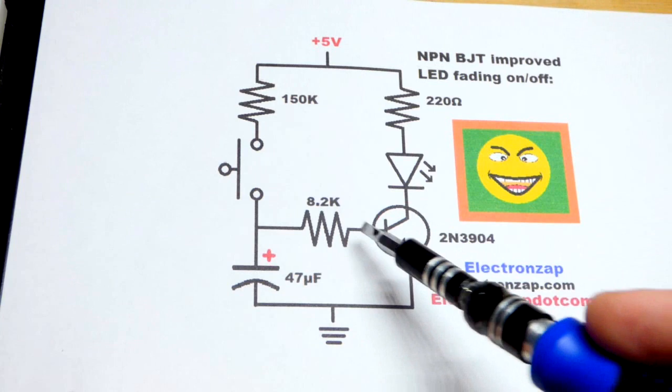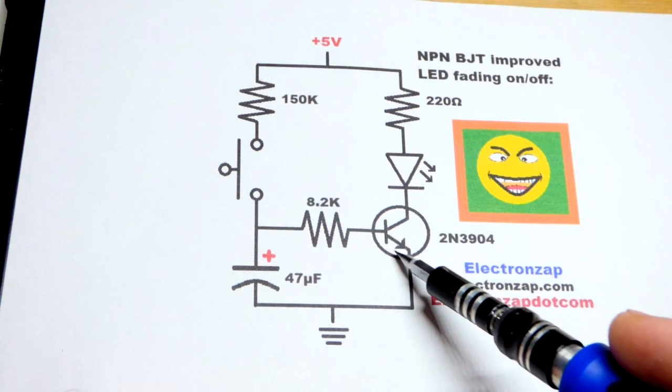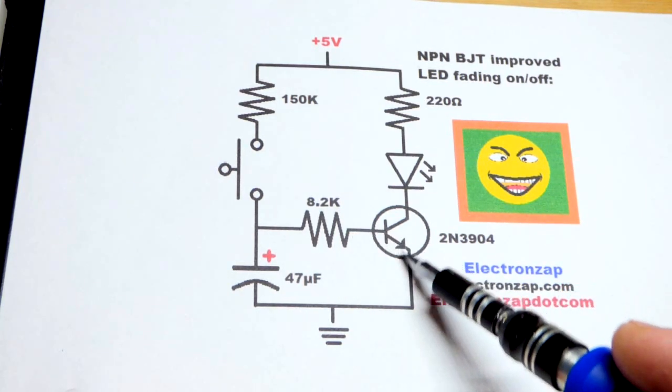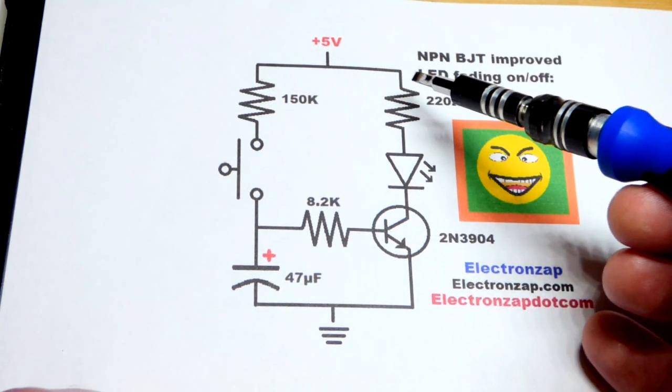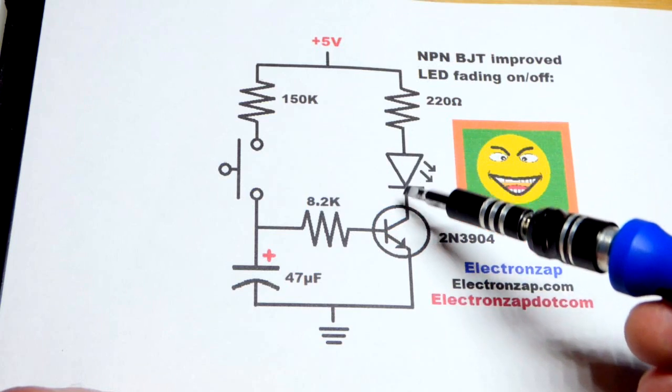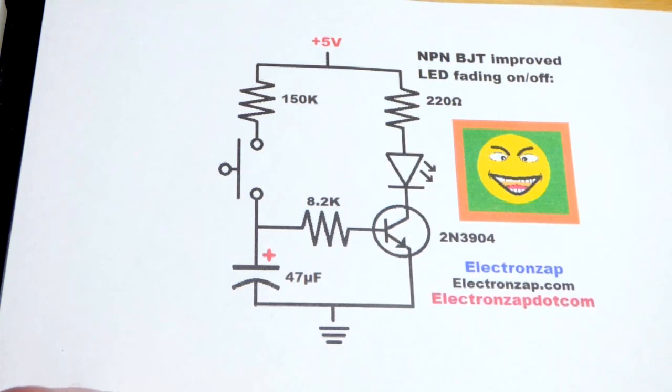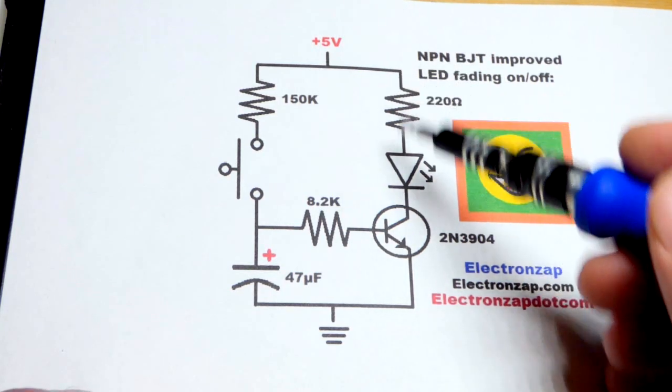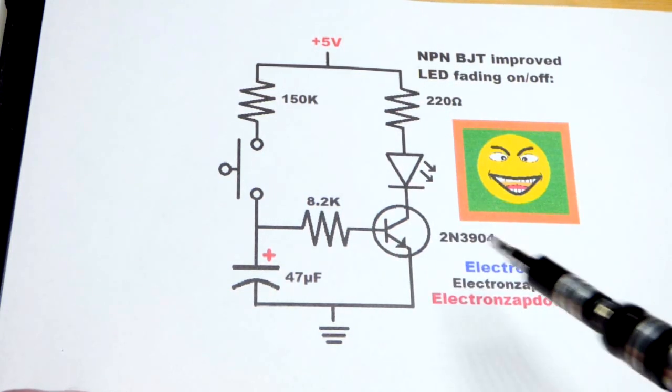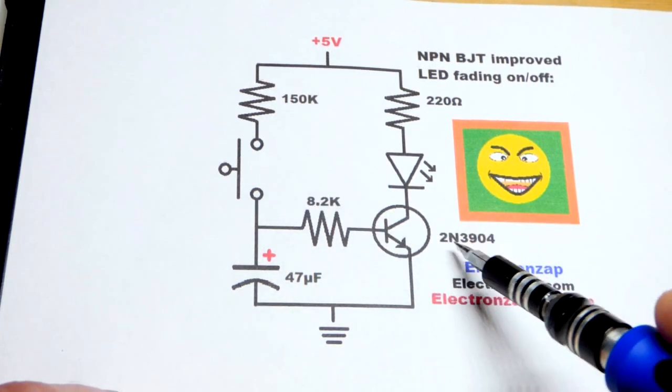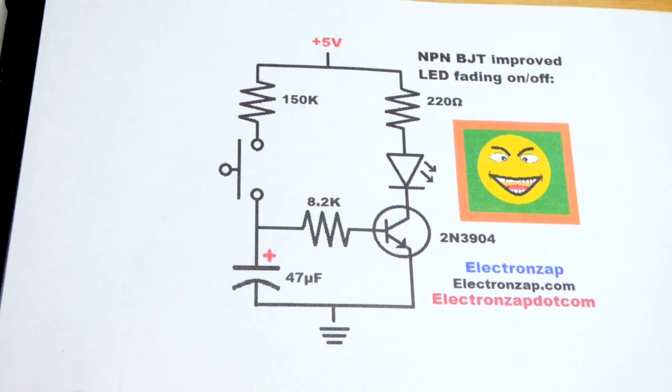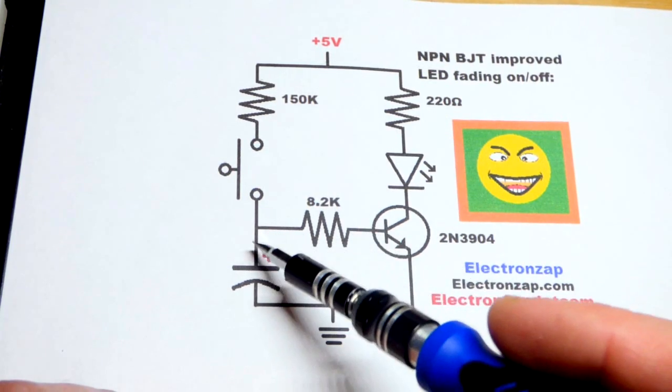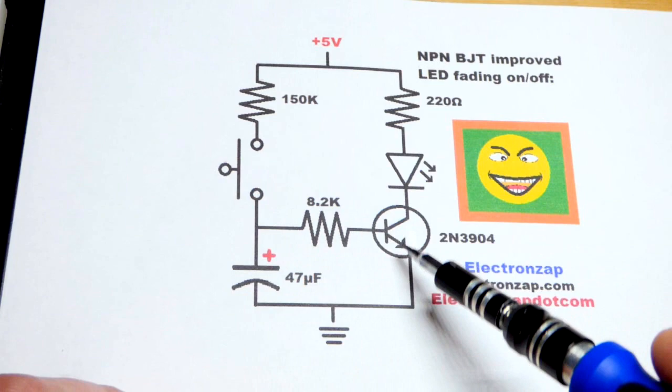Since it's a bipolar junction transistor, once a little bit of current flows, so let's say one microamp, so one millionth of an amp, you're going to have about probably 200 maybe 300 times as much current flowing through there. So maybe two thirds of a milliamp maybe. In any case, exact values don't matter, you just do some testing till you get the results you like. That's what the 2N3904 does.